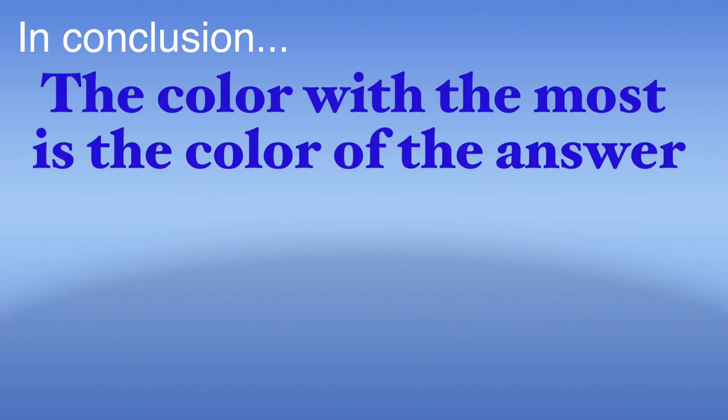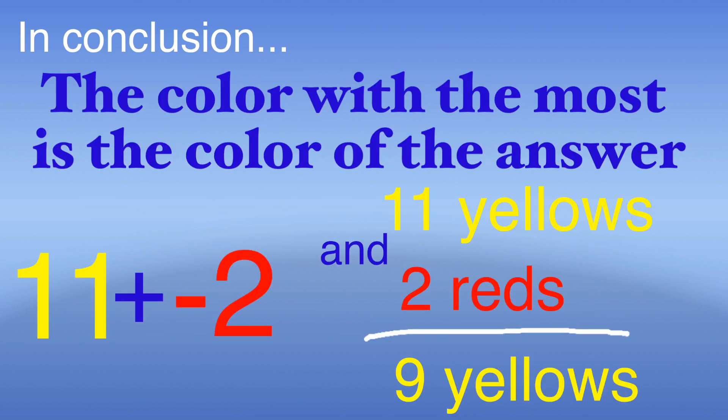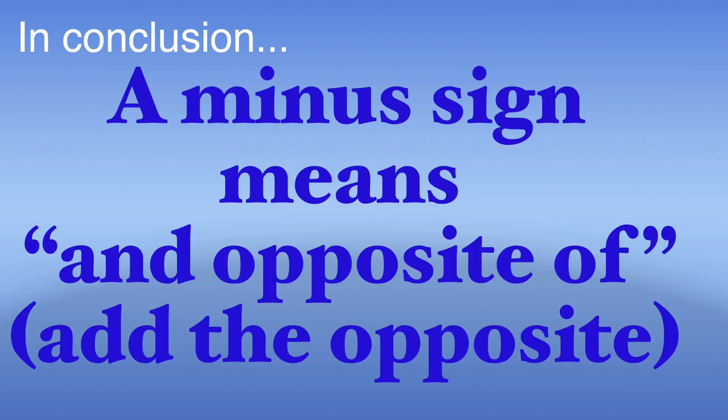So in conclusion, if the colors are the same you add. If the colors are different you subtract. Also the color with the most number is going to be the color of the answer. And lastly when you see a minus sign you will add the opposite color of the one behind it. Thank you.